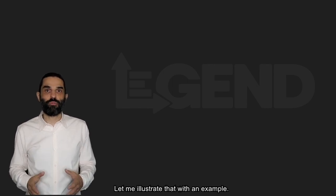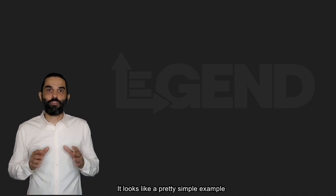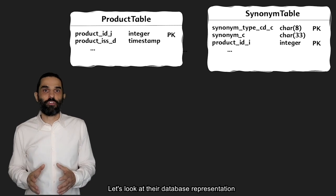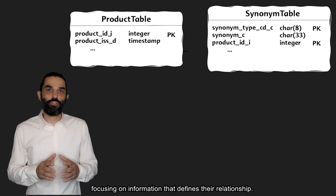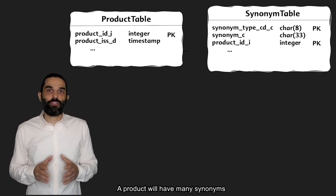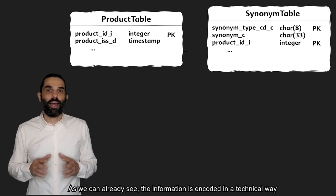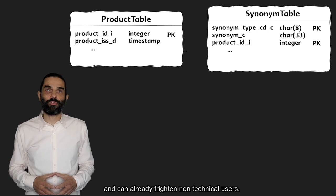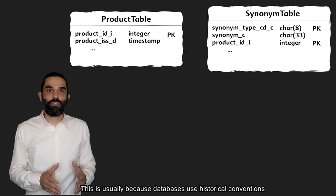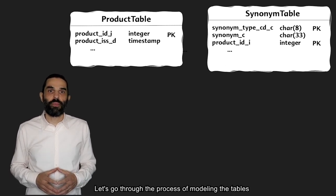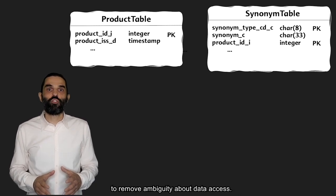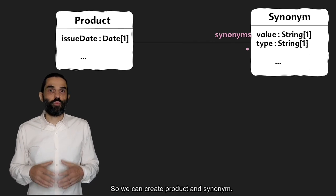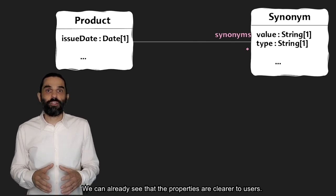Let me illustrate that with an example. Let's look at product and synonyms. It looks like a pretty simple example that is an important building block in the finance data space. Let's look at their database representation focusing on information that defines their relationship. A product will have many synonyms, and that's why the synonyms table contains a product ID key. As we can already see, the information is encoded in a technical way and can already frighten non-technical users. This is usually because databases use historical conventions mostly understood and managed by DBAs. Let's go through the process of modeling the tables to remove ambiguity about data access. So the first thing to do is to create the concepts we are interested in. So we can create product and synonyms. We can already see that the properties are clearer to users.